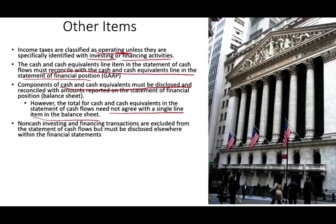Non-cash investing and financing transactions are excluded from the Statement of Cash Flows but must be disclosed elsewhere within the financial statements — same under both U.S. GAAP and IFRS. Examples include buying land by issuing stock, exchanging one asset for another, or issuing debt to buy equipment. Since no cash was used, you disclose these transactions separately.